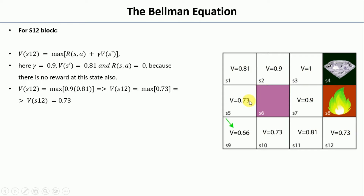Once we have these values, the agent present in any cell can reach the goal state by following the optimal path. For example, if the agent is in S1, it checks neighboring cells: moving right gives 0.9, moving down gives 0.73, so moving right to S2 is better. From S2, left is 0.81 and right is 1, so it moves right to S3. From S3, it goes directly to the goal S4.